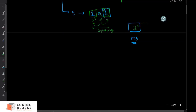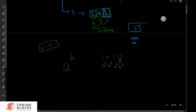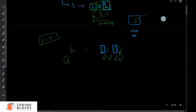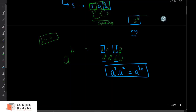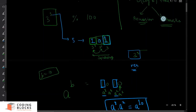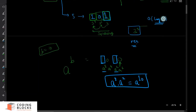So suppose you want to compute a raised to the power b. Write the binary of b — for example, b = 10 is 1010 in binary. At each bit position you generate: a¹, a², a⁴, a⁸. At the positions where the set bit is 1, you multiply that power of a into the result. So for 1010, this gives a⁸ × a² = a¹⁰. The complexity is O(log b), since any number b has at most log b bits.